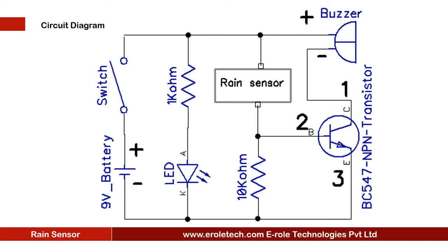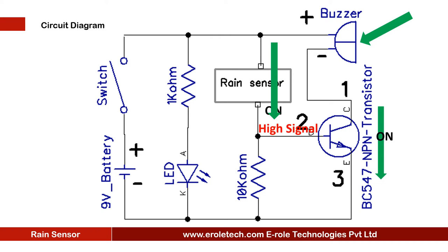When rain falls on the rain sensor, the rain sensor will connect the base terminal of the transistor with a positive supply voltage, and the transistor will turn on. The positive terminal of the buzzer is connected with a positive supply, and the negative terminal is connected with the transistor. When the transistor turns on, it will connect the negative terminal of the buzzer with the ground, and the buzzer will start beeping until the rain stops.